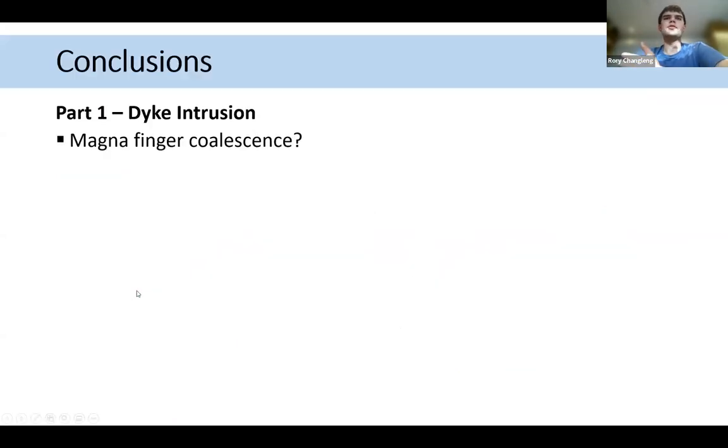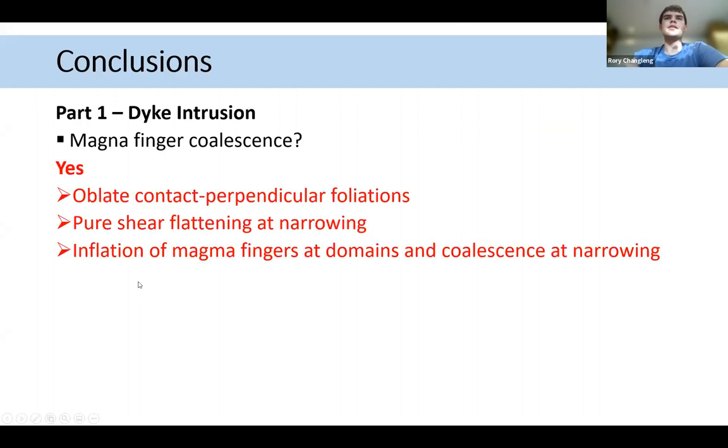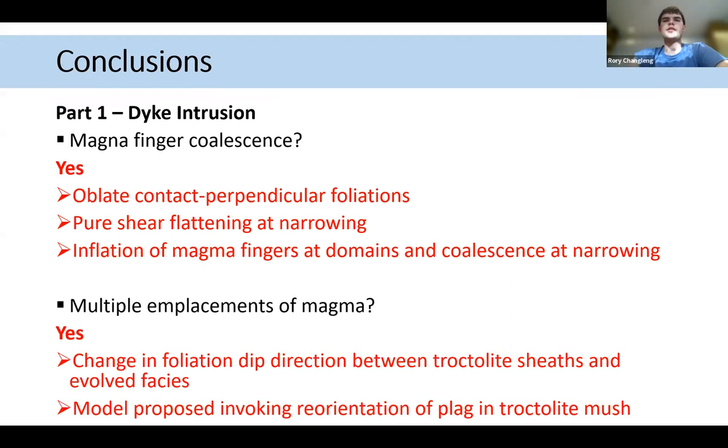So just to conclude, is there evidence of magma finger coalescence? Yes, the fabric being oblate at the narrowing indicates pure shear flattening and the orientation of these magnetic foliations. Could there be multiple emplacements? Yes, this change in foliation dip direction indicates that it's likely that we do have multiple emplacements occurring.